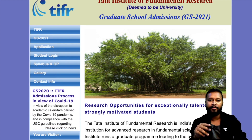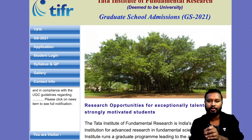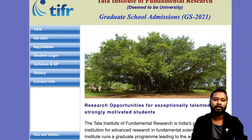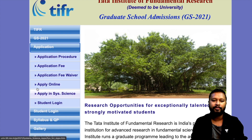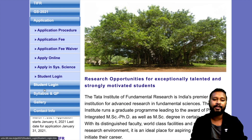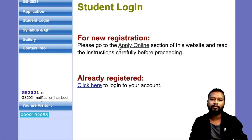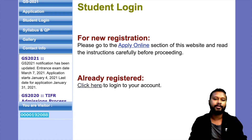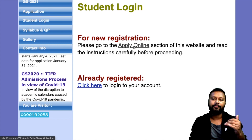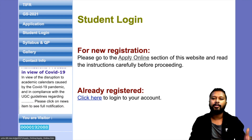The link to reach this website is in the description of this video. This website is for TIFR GS 2021. On the left side you have all the options — you can check the application procedure, application fees, and all these things. But what we are more interested in is Student Login. Go for Student Login, and for new registration click 'Please go to Apply Online section'. If you have already registered, you can click the other option.